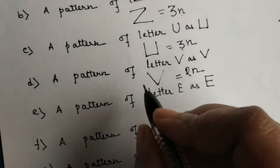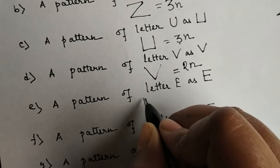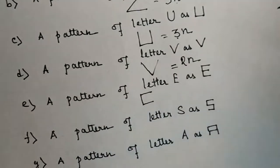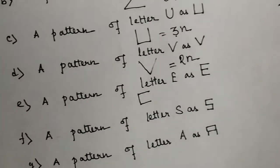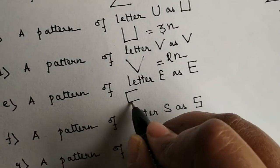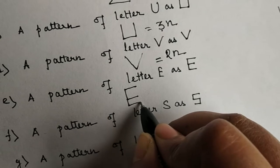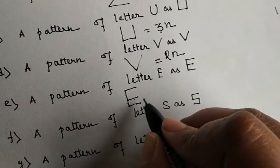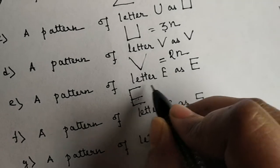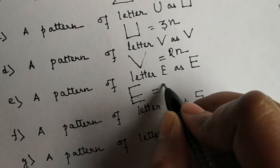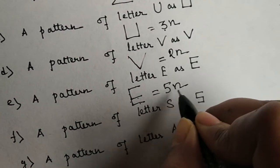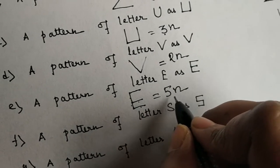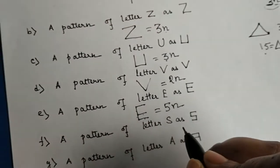Now, a pattern of the letter E. Counting the mastics: 1, 2, 3, 4, 5 — total 5 mastics are used in one letter E. So the rule will be 5 into n, where 5 is the number of mastics in one alphabet and n is the number of E's.